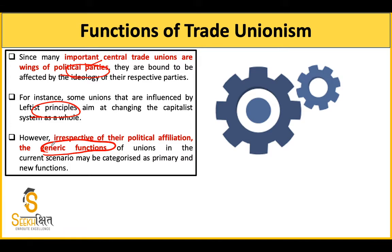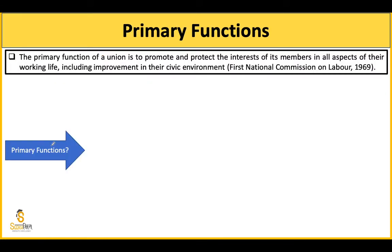तो यहाँ पर कोई difference नहीं आता। इन functions को हम समझने की कोशिश करेंगे - यह generic functions कौन से हैं। सबसे पहले बात कर लेते हैं primary functions की। Primary functions को define किया है First National Commission on Labor ने। वो कहता है कि primary functions वो function होते हैं जो union को help करते हैं promote करने में और protect करने में अपने members के interest को - चाहे वो interest working life से related हो या उनकी civic environment की improvement से related हो।